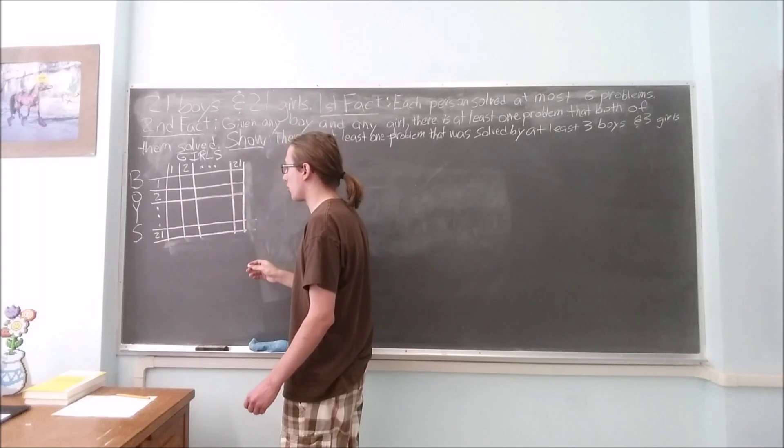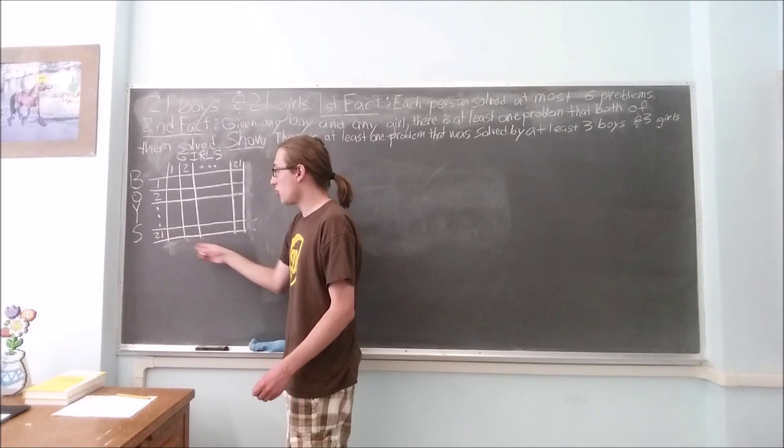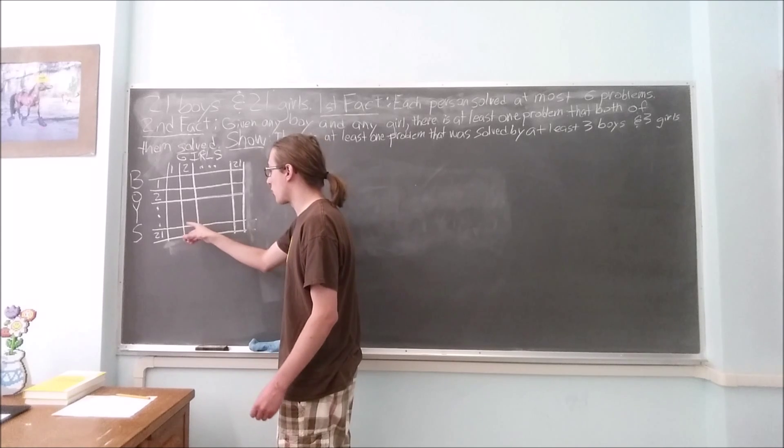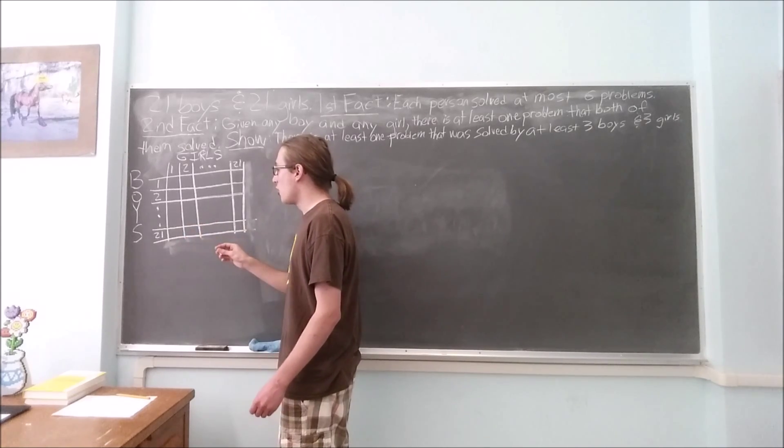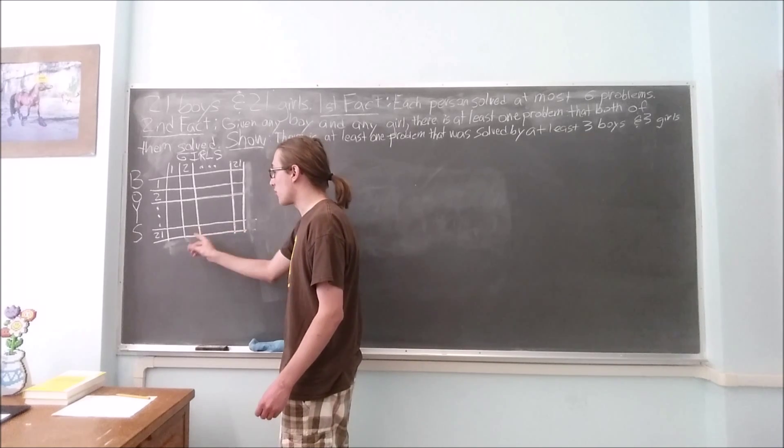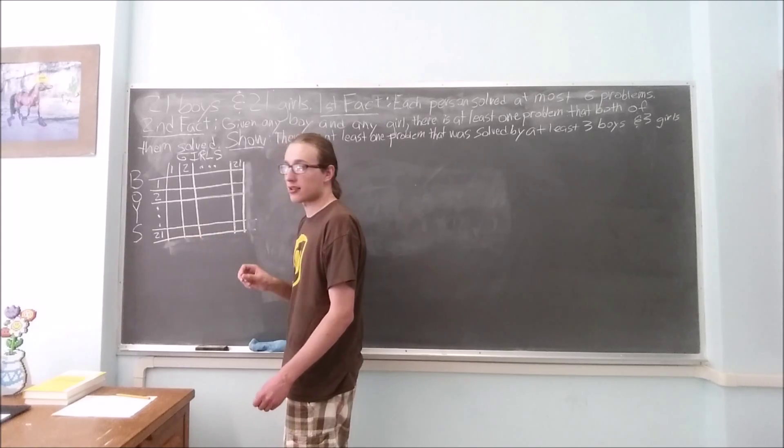If we pick one row, let's say the 21st row, and one column, let's say the second column, then we know there is one square where they intersect. We also know that there is at least one problem that both the 21st boy and the second girl solved. So let's take that problem and let's put it into that box.